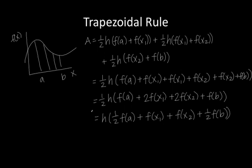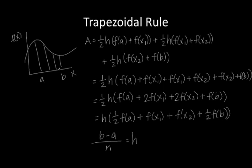To determine the height h, we split the area under the curve into equal-width trapezoids. We take the difference b minus a and divide by n, the number of trapezoids, to get h. In conclusion, the area under the curve can be approximated using the trapezoidal rule: h equals b minus a divided by n, times one-half the first value plus one-half the last value plus all the intermediate values of x.